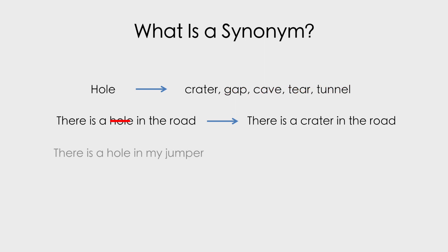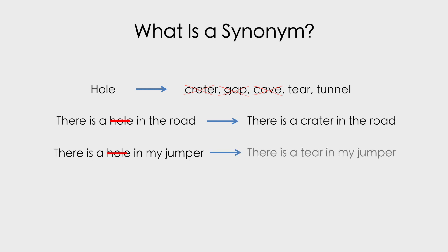Next one: there is a hole in my jumper. So I want to replace 'hole'. Now, crater sounds a bit odd here because we associate craters with land. Gap, as previously, suggests two separate mediums. Cave — it's impossible to have a cave in your jumper. Tear — that seems right, because tear is associated with fabric and we can picture a tear in a jumper. And tunnel — again, it's impossible to have a tunnel in your jumper. So the appropriate one here is: there is a tear in my jumper.